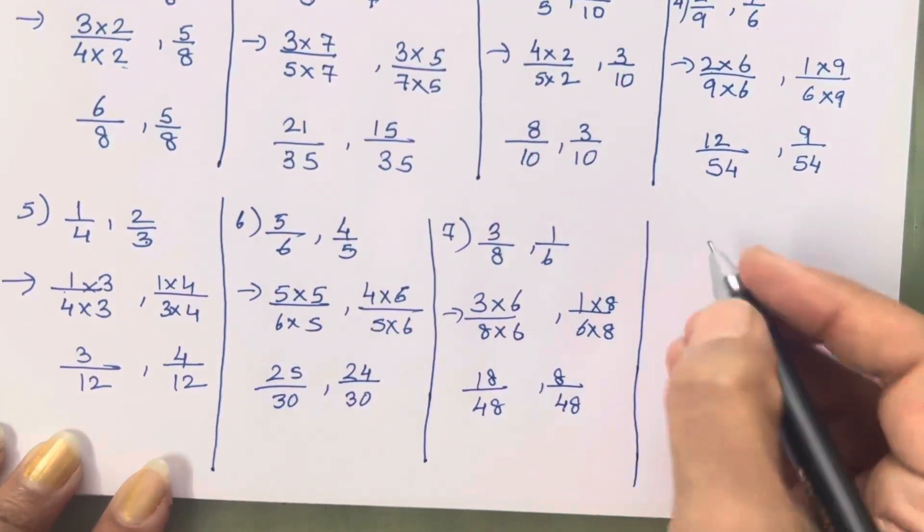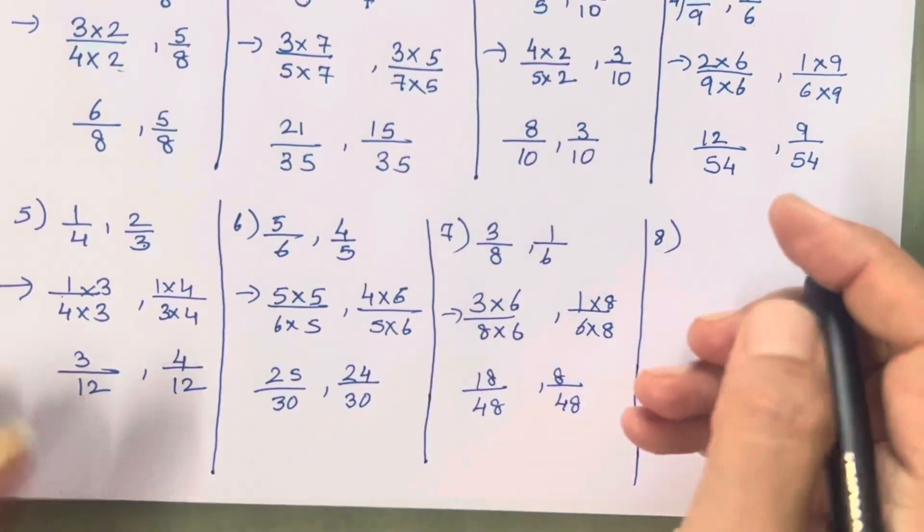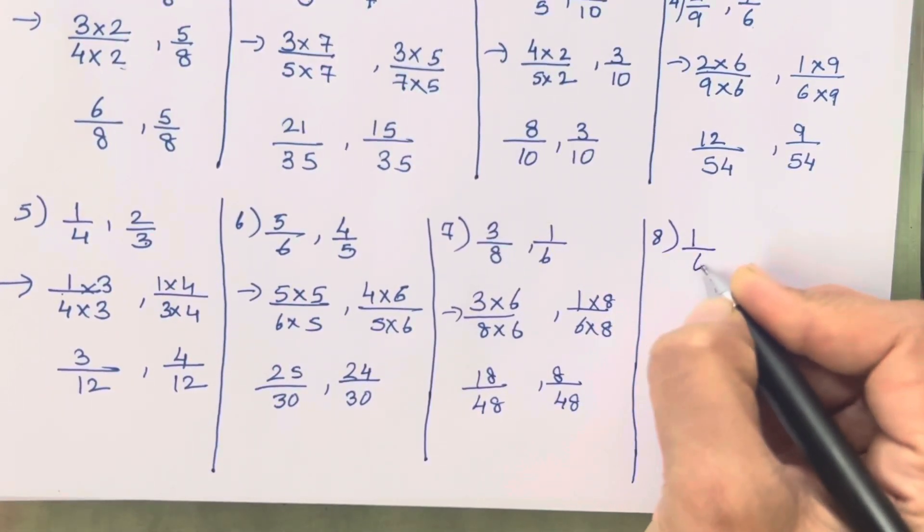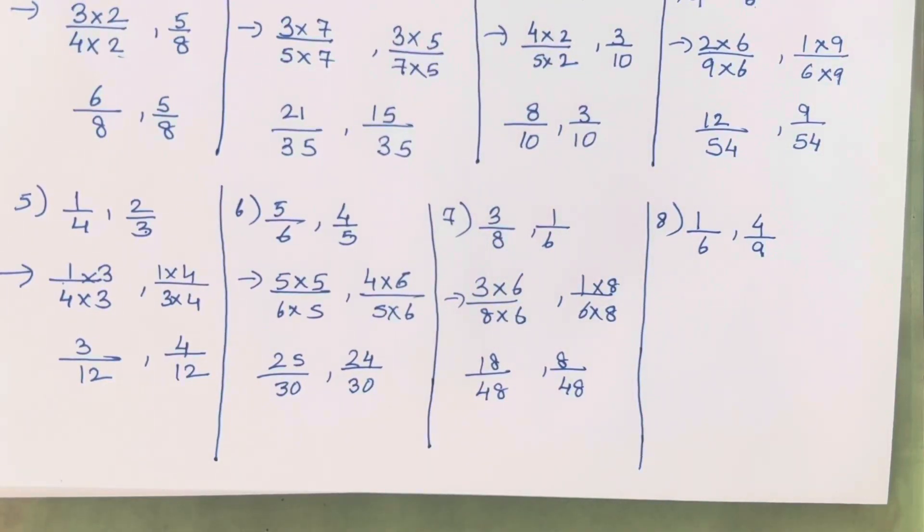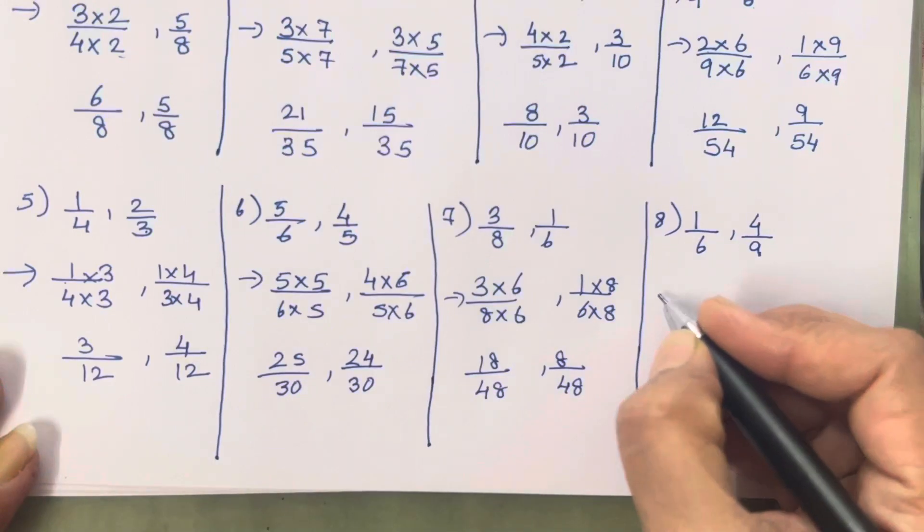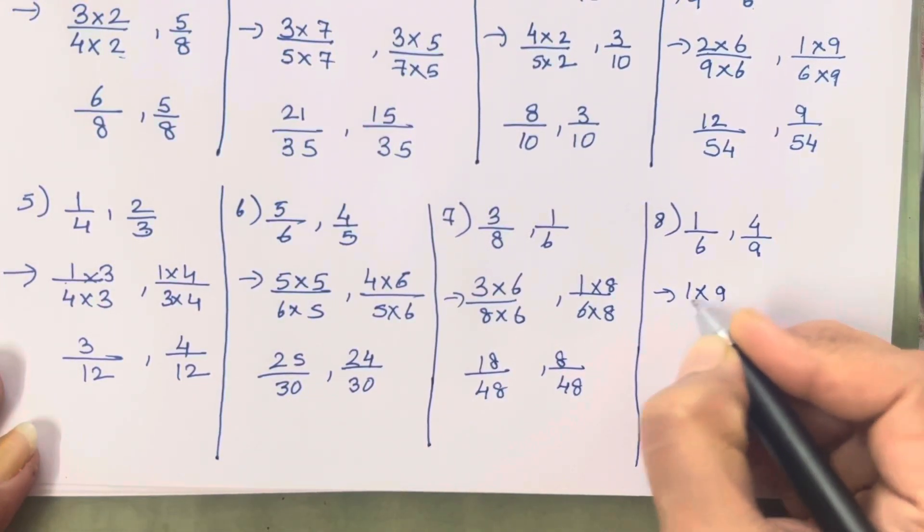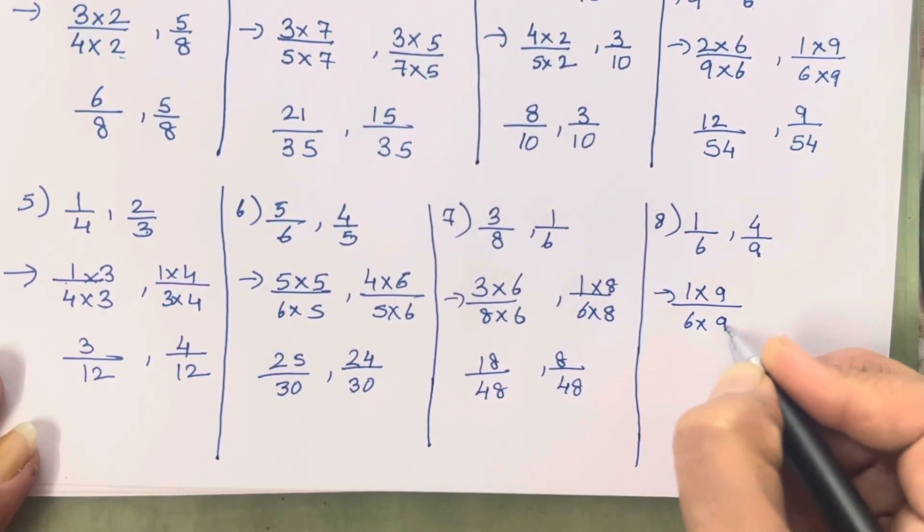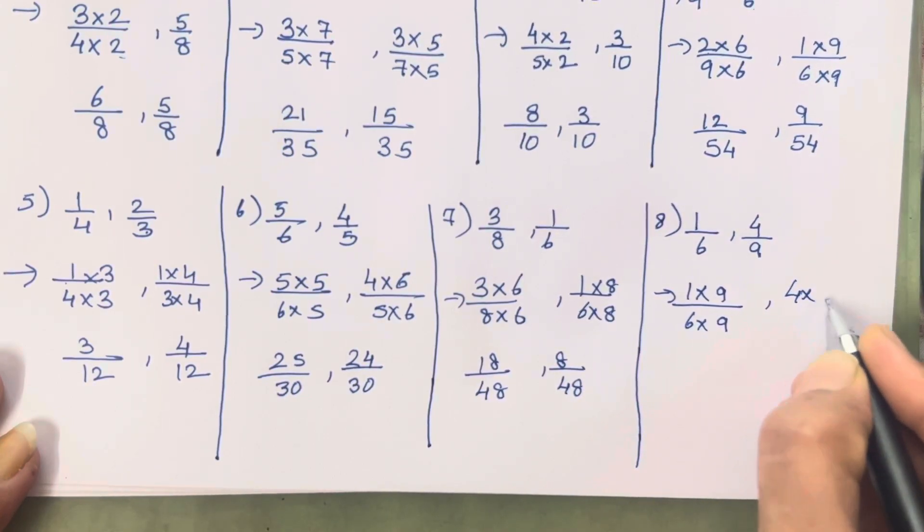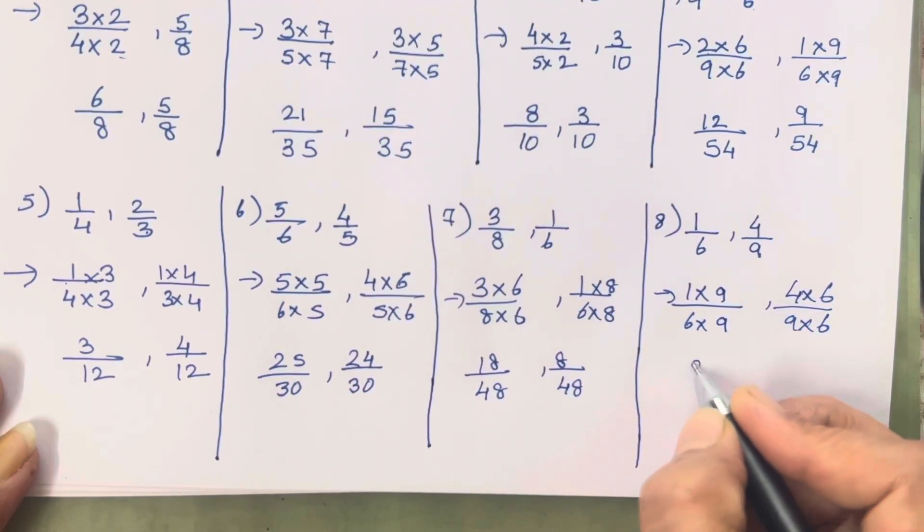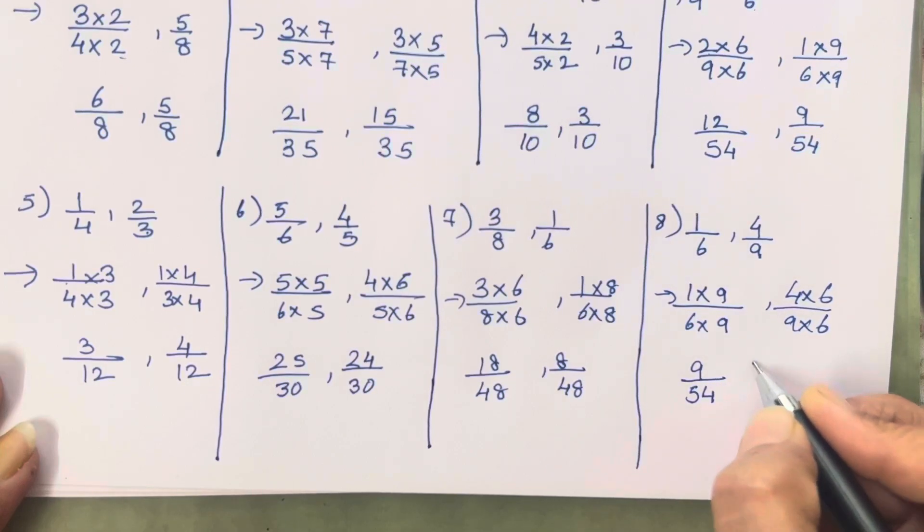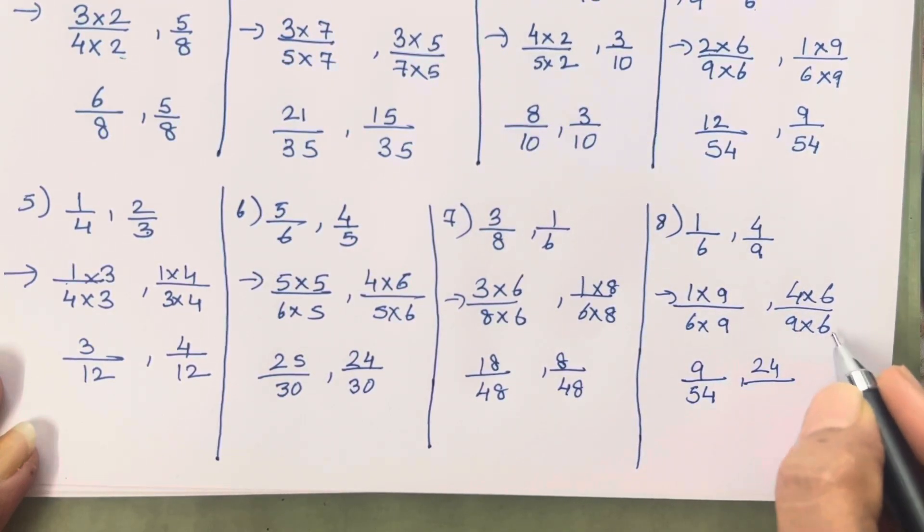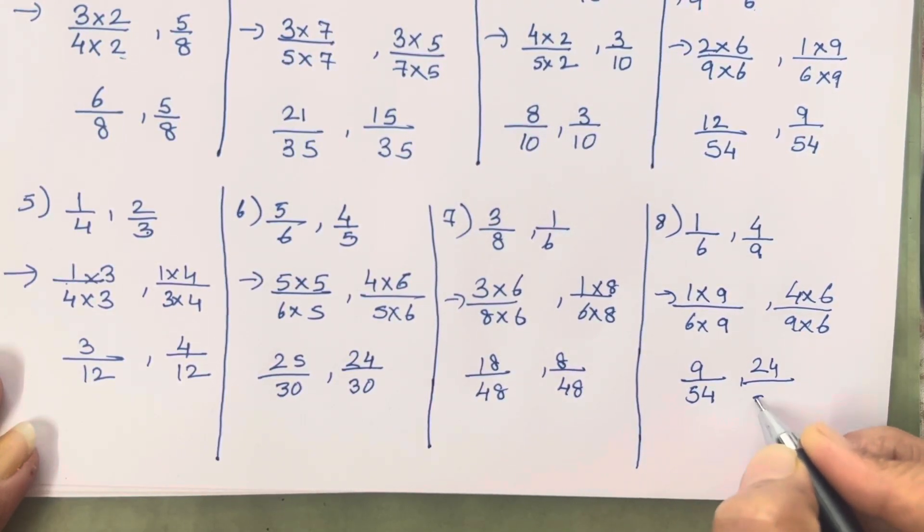Next is the eighth one, that is 1 upon 6 and 4 upon 9. So again 6 ki table me 9 nahi aata, 9 ki table me 6 nahi aata. Multiply it with the same number, opposite numbers. 1 into 9, 6 9s are 54. 4 6s are 24 and 9 6s are 54.